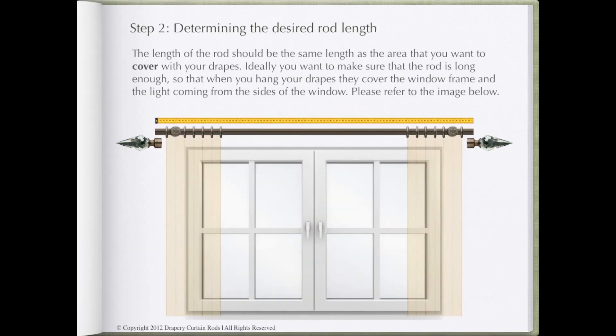The length of the curtain rod should be the same length as the area that you want to cover with your drapes. Ideally you want to make sure that the rod is long enough so that when you hang your drapes they cover the window frame and the light coming from the sides of the window. Please refer to the image below.